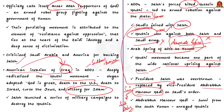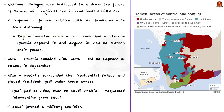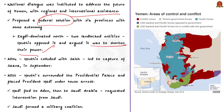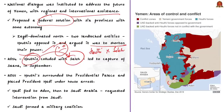A national dialogue was set up to address the future of Yemen with regional and international assistance. The dialogue proposed a federal solution with six provinces with some autonomy. In this, the Zaydi-dominated north got divided into two landlocked entities, which Houthis argued was against them and shortened their power. Surprisingly, in 2014, the Houthis — who were initially against Saleh — colluded with him and captured Sana'a, the capital city of Yemen. Then in early 2015, Houthis surrounded the presidential palace and placed President Hadi under house arrest, and Hadi fled to Aden and then to Saudi Arabia.